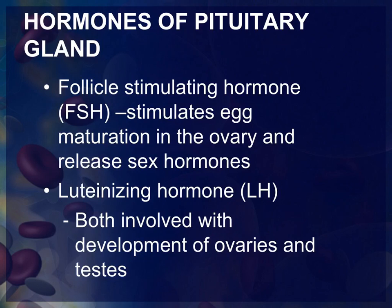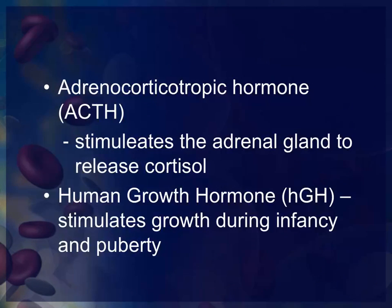The follicle-stimulating hormone (FSH) stimulates egg maturation in females and releases sex hormones in males and females. The luteinizing hormone (LH) is involved in the development of the ovaries and testes. Adrenal corticotropic hormone (ACTH) stimulates the adrenal gland to release cortisol. Human growth hormone (HGH) stimulates growth during infancy and puberty.